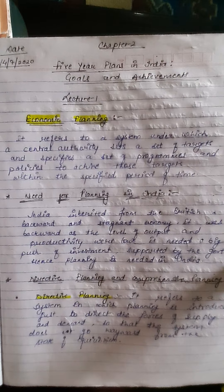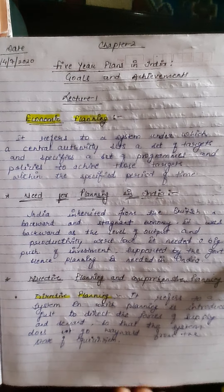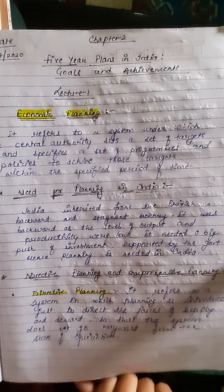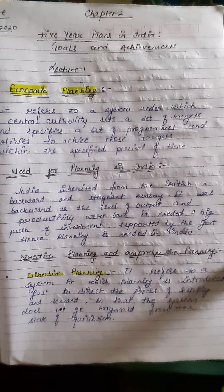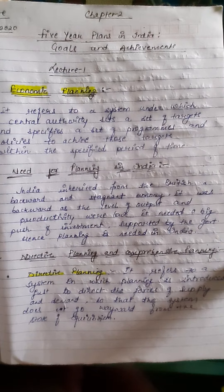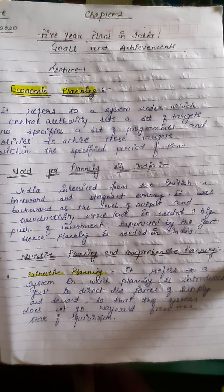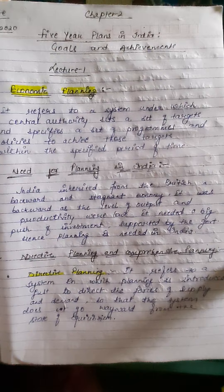There are two types of planning: directive planning and comprehensive planning. Directive planning refers to a system in which planning is introduced just to direct the forces of supply and demand so that the system does not go way out from the state of equilibrium. There is no direct participation of the state in growth; it is more like directing the private sector with a set of dos and don'ts so that national interest does not suffer while individual gains are maximized. Directive planning is pursued in capitalist economies.